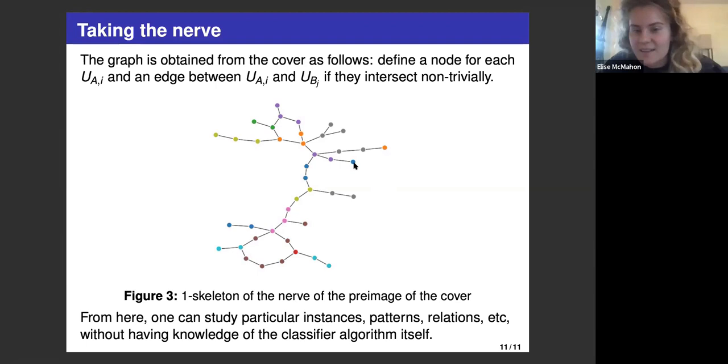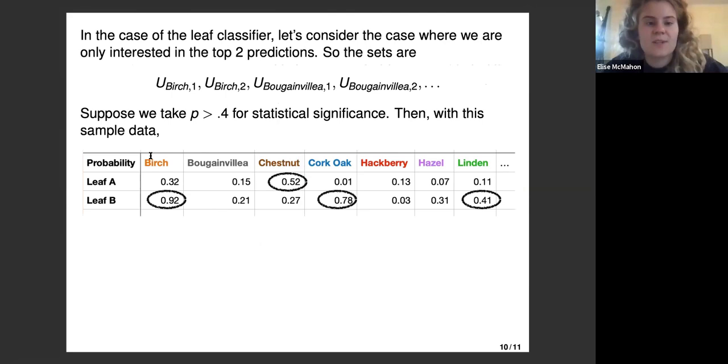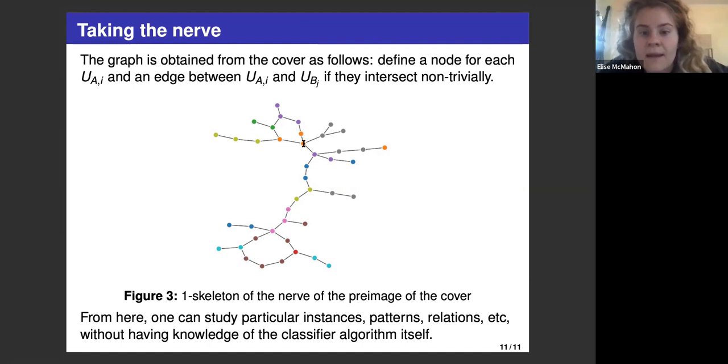It gives a very interesting graph, because if it was perfect, you would just have that each node had... The nodes here are colored by the most common leaf in that set. For example, this orange node is colored that because most of the leaves in it were birch, because birch here is colored orange. It might just only have birch, but it also might have other leaves in it. These edges are representing a leaf that was classified as both types, and so this loosely represents a relationship between types.